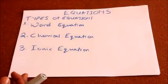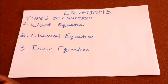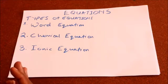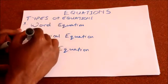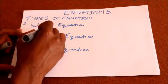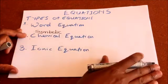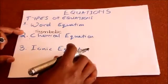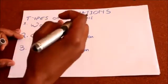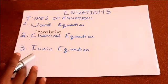There are three types of equations that we are interested in as chemists. We have the word equation, we have the symbolic equation — which uses symbols of elements or compounds — and we have the ionic equation.